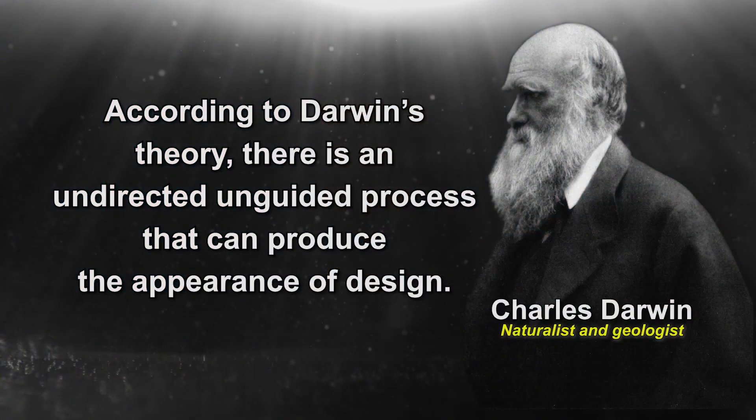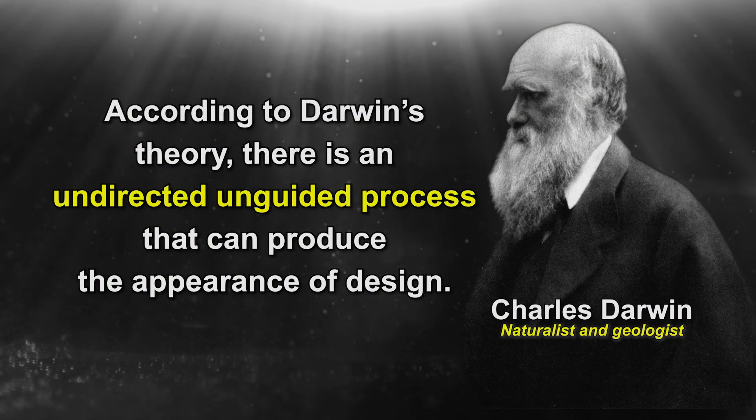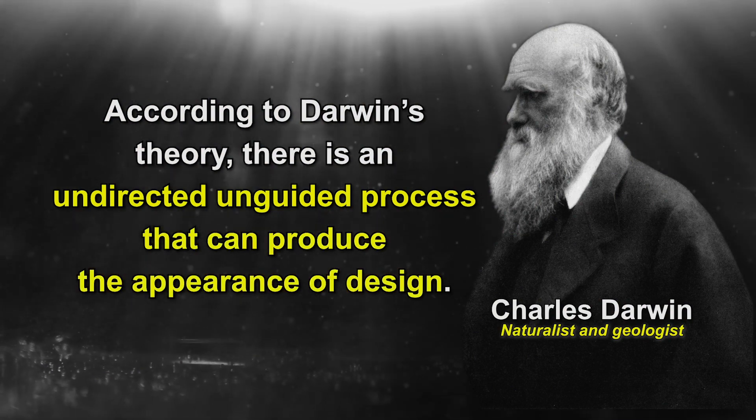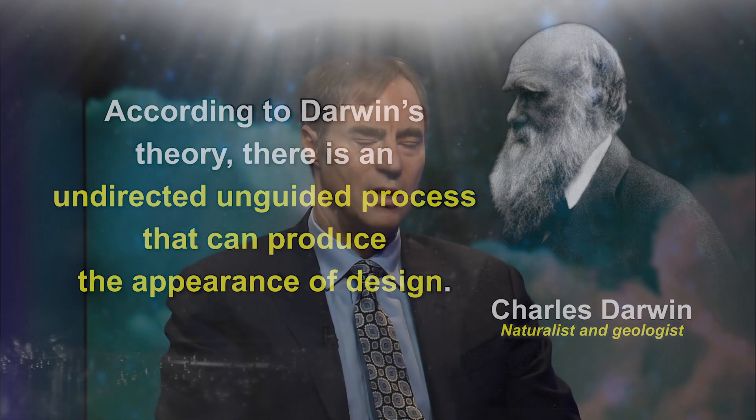He says that because, according to Darwin's theory, there's an undirected, unguided process that can produce the appearance of design — the illusion of design — without there being a designing mind or intelligence guiding that process in any way. So we have design without a designer. That's the Darwinian view.